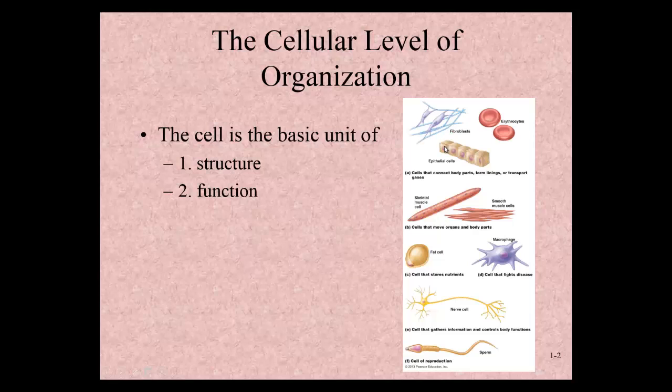They all have a plasma membrane. Most of them have a nucleus. The one exception are the red blood cells. They all have cytoplasm. So when we look at any body system, we can break the body system down into organs, further breaking it down into tissues, further breaking it down into cells.